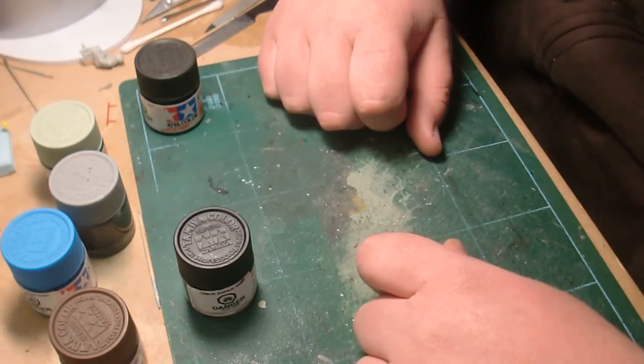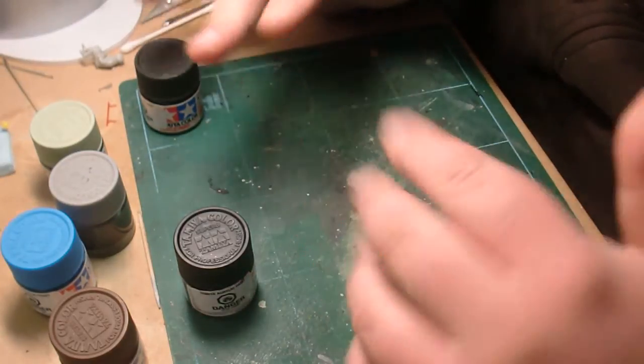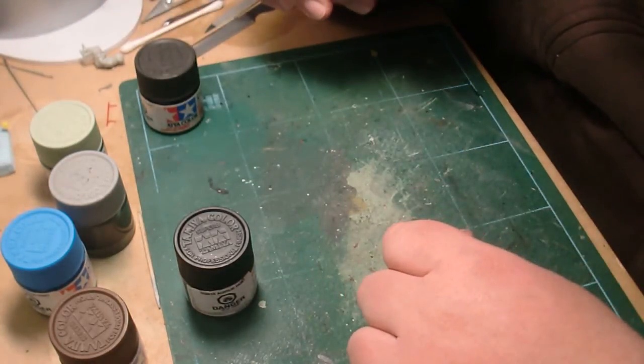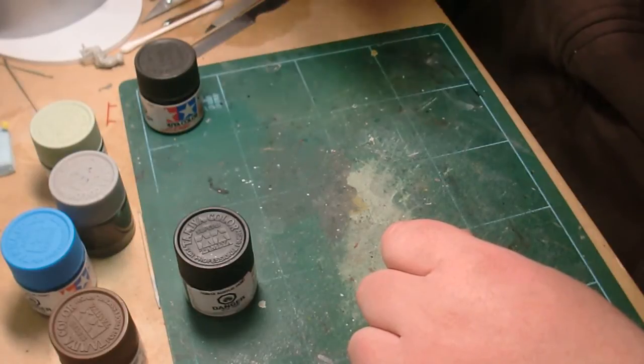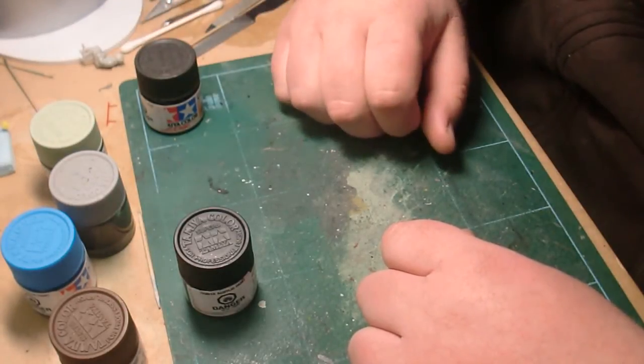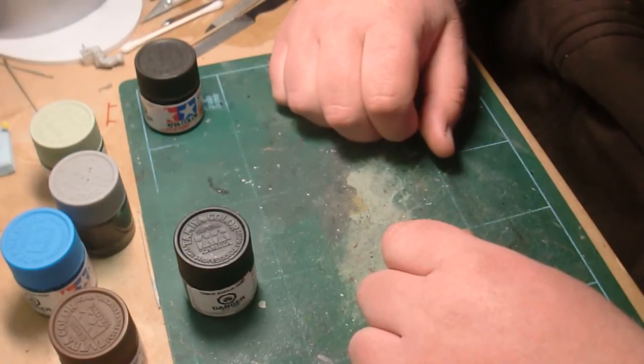What I did instead is I tried sanding it, tried wet sanding it. That worked a little bit, but it would have taken me hours and hours to do it and I wouldn't have been able to do it without taking the model apart because of all the wings and it's so tiny and fiddly.